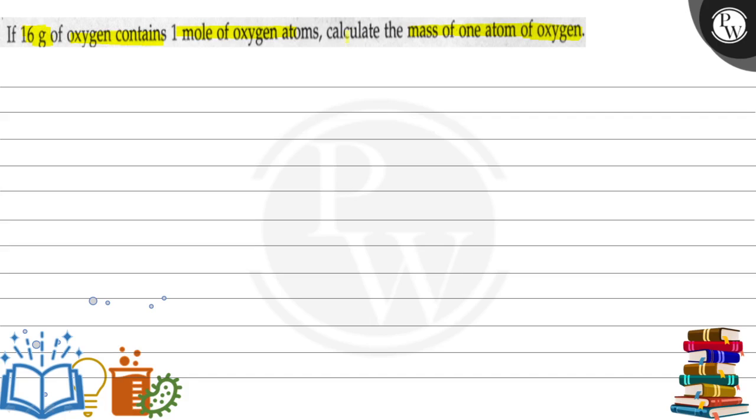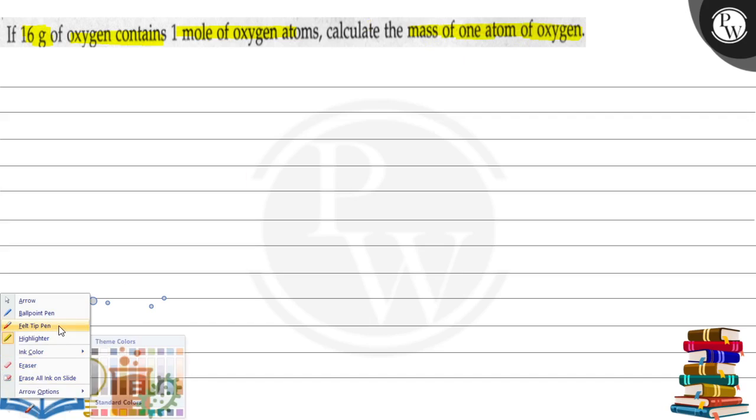This question gives us that if 16 grams of oxygen contains 1 mole of oxygen atoms, then we have to calculate the mass of 1 atom of oxygen. Okay, so let's start doing this question.